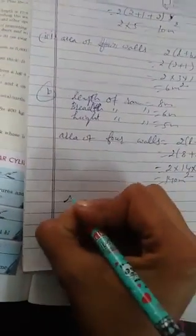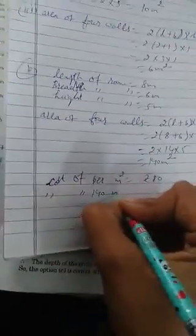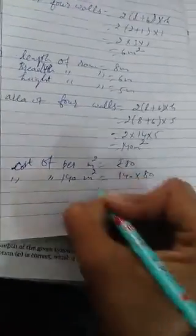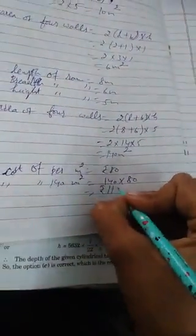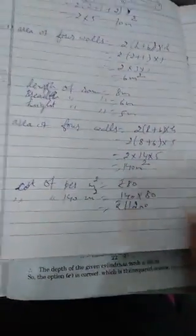We have to find cost. Cost of per meter square is given rupees 80. We have to find cost of 140 meter square. Multiply 140 with 80. That is equal to rupees 11,200. This is the cost.